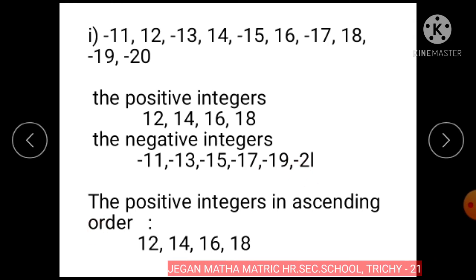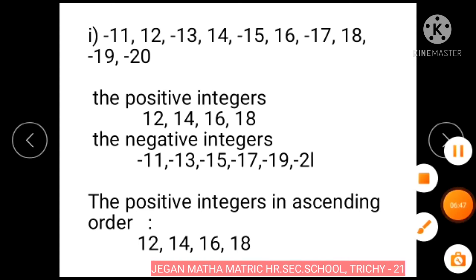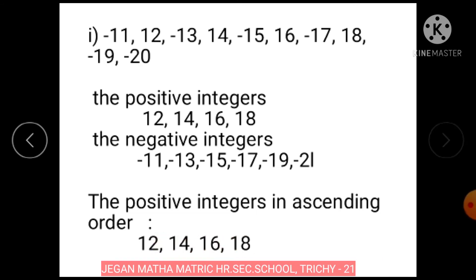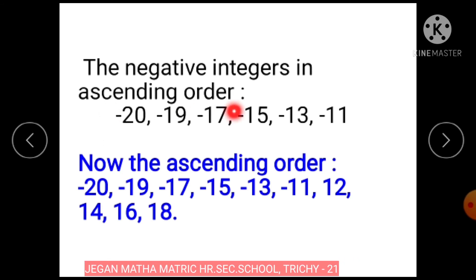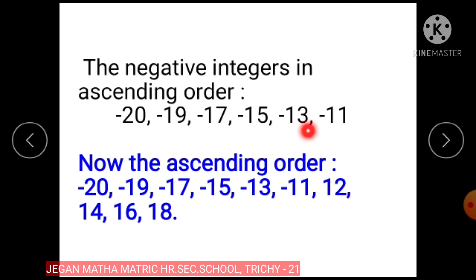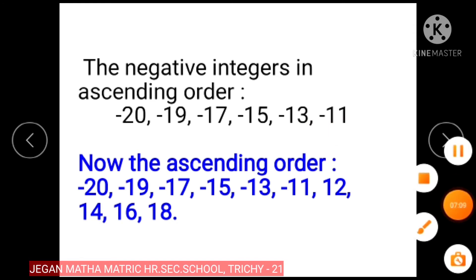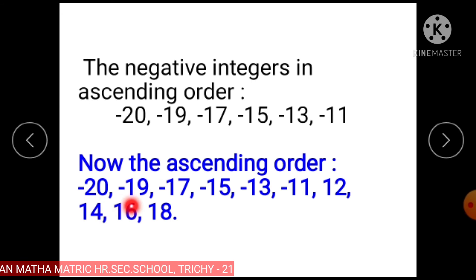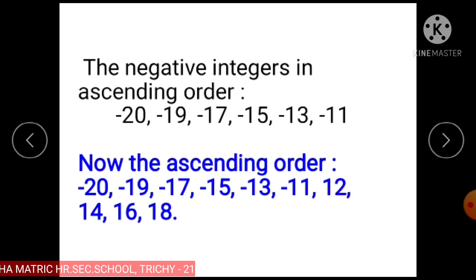The positive integers in ascending order are 12, 14, 16, and 18. The negative integers in ascending order are minus 20, minus 19, minus 17, minus 15, minus 13, and minus 11. So the given integers in ascending order are minus 20, minus 19, minus 17, minus 15, minus 13, minus 11, 12, 14, 16, and 18.